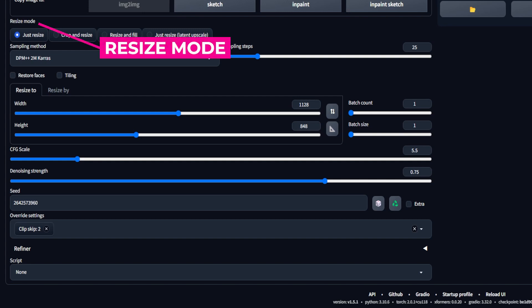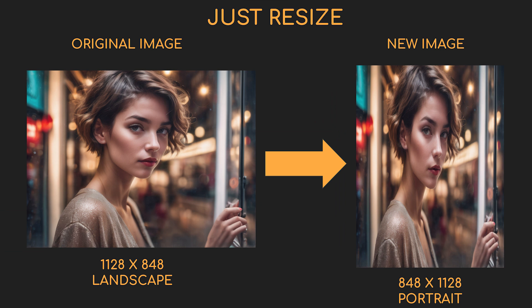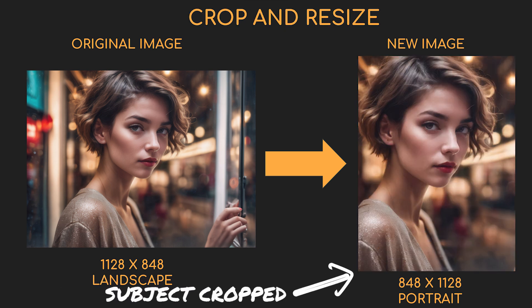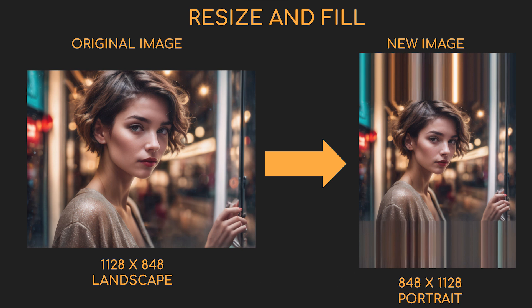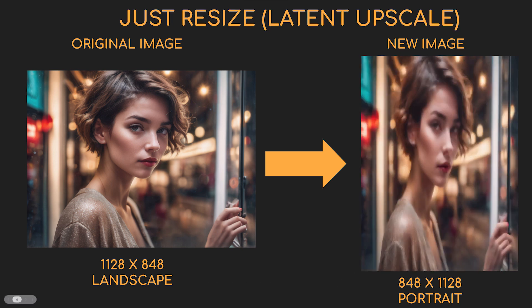The first new setting is Resize Mode. Use this if your new image will have a different size or aspect ratio than your original image — for example, if your original image is landscape and you want your new image to be portrait. The default is 'Just Resize', which will stretch or shrink your original image to fit the new image you create. 'Crop and Resize' will keep the aspect of your original image and crop it to fit the new canvas size. 'Resize and Fill' takes the original image, fits it into the canvas, and fills in the blanks with colors from the input image. 'Just Resize Latent Upscale' is just like 'Just Resize' but also upscales the image if necessary.